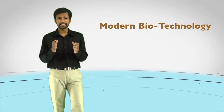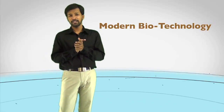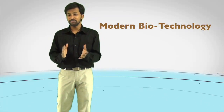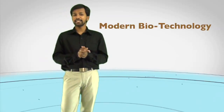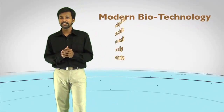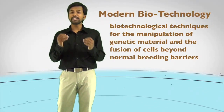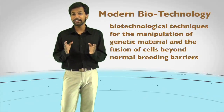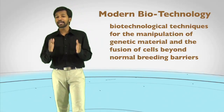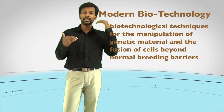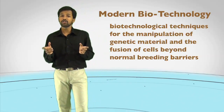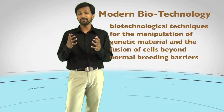Modern biotechnology, as defined by the International Convention on Biological Diversity, is any biotechnological technique for the manipulation of genetic material or fusion of cells beyond normal breeding barriers. That point — beyond normal breeding barriers — is very important. This makes the difference between the earlier broad definition of biotechnology and this specific definition of modern biotechnology. When you use these terms, you can be more confident in applying them where required.